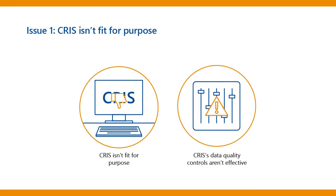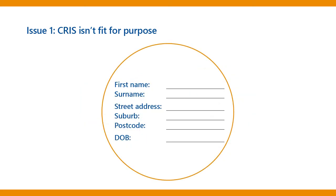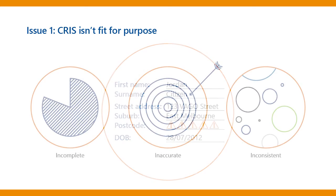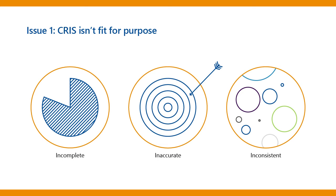We found that CRIS isn't fit for purpose and some of its data quality controls aren't effective. For example, CRIS has controls to make sure users fill mandatory data fields, but we found they're not always filled. This leaves gaps in the data. Some of the data in CRIS we looked at was incomplete, inaccurate and inconsistent.